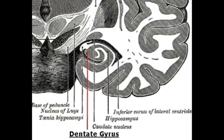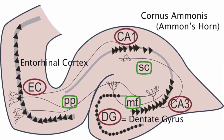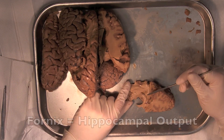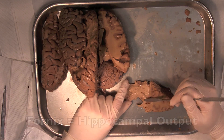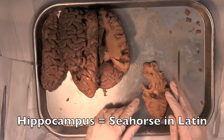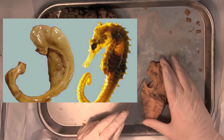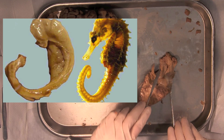The dentate gyrus of the hippocampal formation is another known area where neurogenesis exists. The hippocampus takes input from entorhinal cortex, a small six-layer area of cortex along the side of the hippocampus, and sends its output to cerebral cortex via the fornix, which is this cluster of axons seen here. The hippocampus was named after the Latin word for seahorse, and you can certainly see the likeness, especially if I expose the tail of the hippocampus — it looks a bit more like a seahorse.